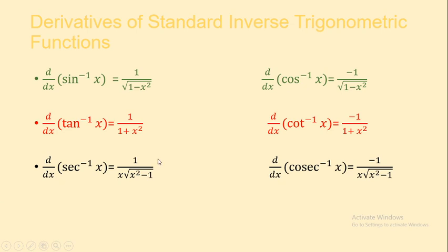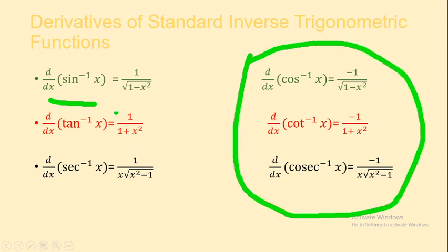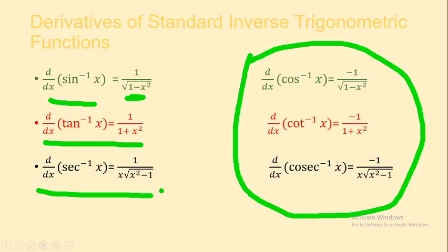These are the basic formulas of standard inverse trigonometric functions. The first one is sine inverse x, and the formula is 1 upon root of 1 minus x square. For tan inverse x the formula is 1 upon 1 plus x square — the substitution was a square plus x square, so 1 upon 1 plus x square. And the third one is sec inverse x, whose derivative is 1 upon x times root of x square minus 1.